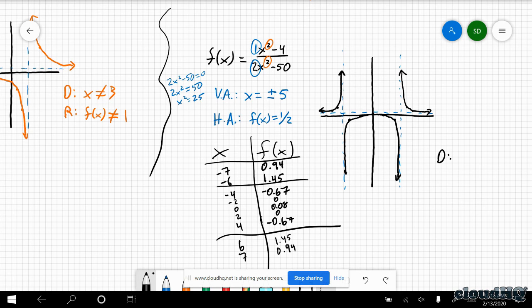And so for our domain there were two things x couldn't equal. X couldn't equal negative 5 and x couldn't equal positive 5. For your range, never equaled our horizontal asymptote which is one half. All right, then you should be able to now get to work on your assignment. You will find your assignment on canvas. Go ahead and spend any remaining time on that.